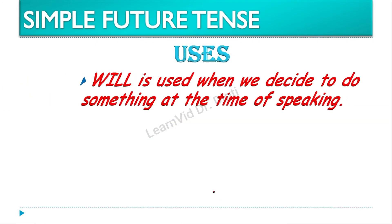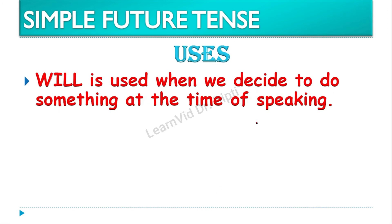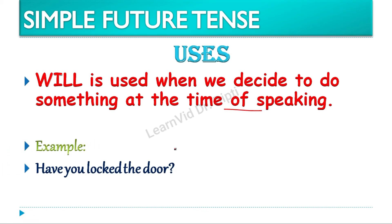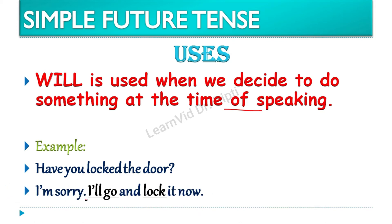The second use of will: will is used when we decide to do something at the time of speaking. Example: Someone asks, 'Have you locked the door?' — kya tumne door lock kar diya? The answer would be: I am sorry, I will go and lock it now. Toh yahaan par ye kaam usi time kar rahe hain jab aap baat kar rahe hain — the action is done at the time of speaking. Toh I ke saath will use hua hai, and go and lock are the root forms of the verbs.